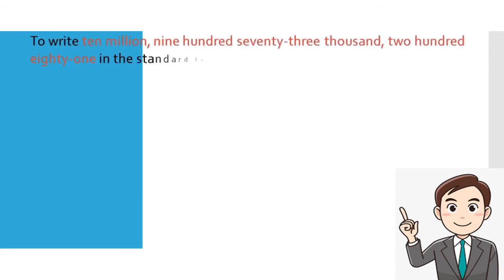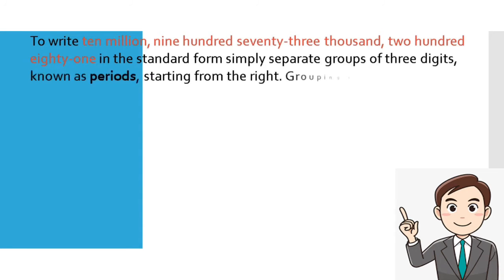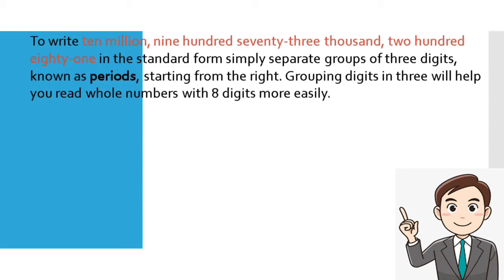To write ten million, nine hundred seventy-three thousand, two hundred eighty-one in the standard form, simply separate groups of three digits, known as periods, starting from the right. Grouping digits in threes will help you read whole numbers with eight digits or more easily.